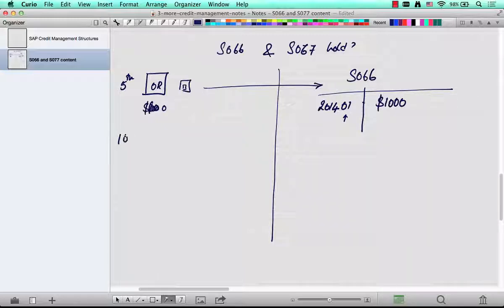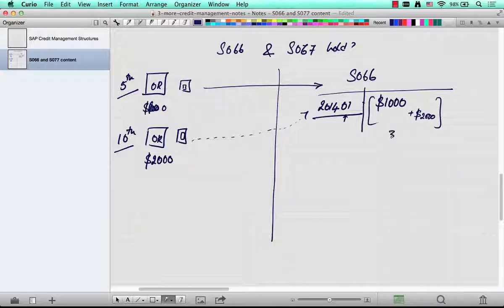Now, on Jan 10th, there is another order, this time for $2000. And again, as soon as you hit save, the system goes into the same table and updates this row because it's still January. This order is on the 10th of January and this order is on the 5th of January. So it's still January. So it updates this row, adds $2000 to it and makes this value column $3000.